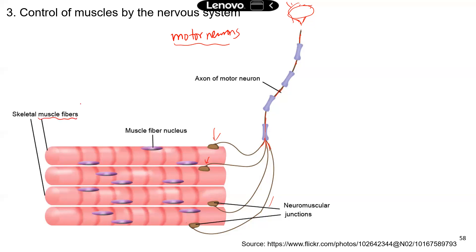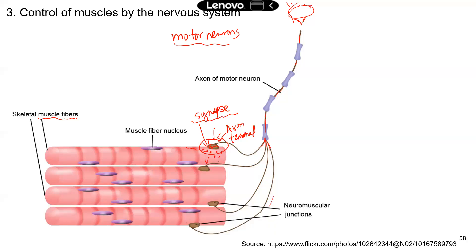Muscle cells are also known as muscle fibers. Now if you look at this part very closely — that's called a synapse — that's the location where the axon terminal can release neurotransmitters. For example, acetylcholine is what a motor neuron axon terminal can release. Acetylcholine diffuses through the synaptic cleft, which is the space between the axon terminal and the muscle fiber. Acetylcholine moves through the space and binds to the receptors on the muscle fiber, triggering a series of reactions that lead to muscle contraction.